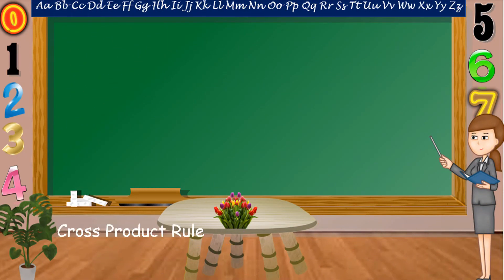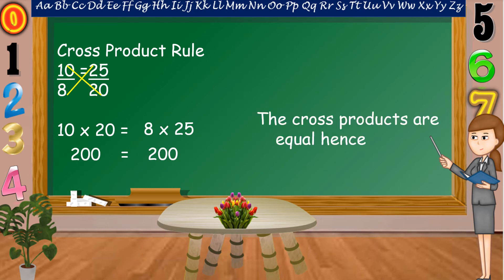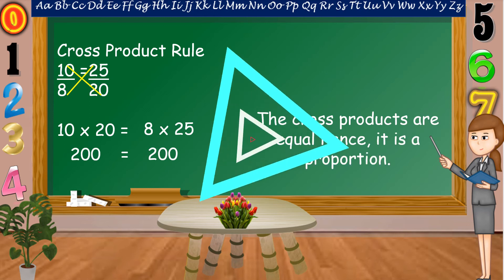We can use also the cross-product rule to check if the two ratios are proportion. So, let's cross-multiply. 10 times 20 is equal to 8 times 25. 10 times 20 is equal to 200, as 8 times 25 is equal to 200 also. Therefore, the cross-products are equal, hence it is a proportion.